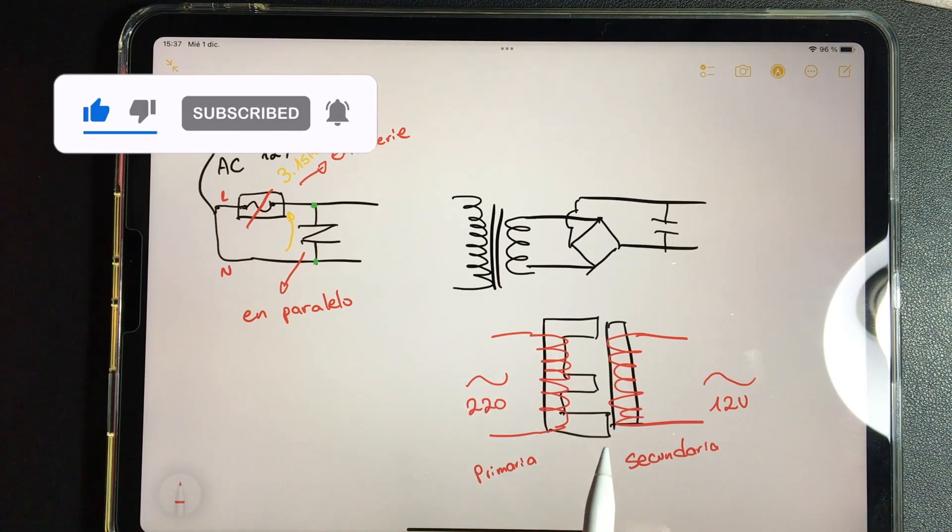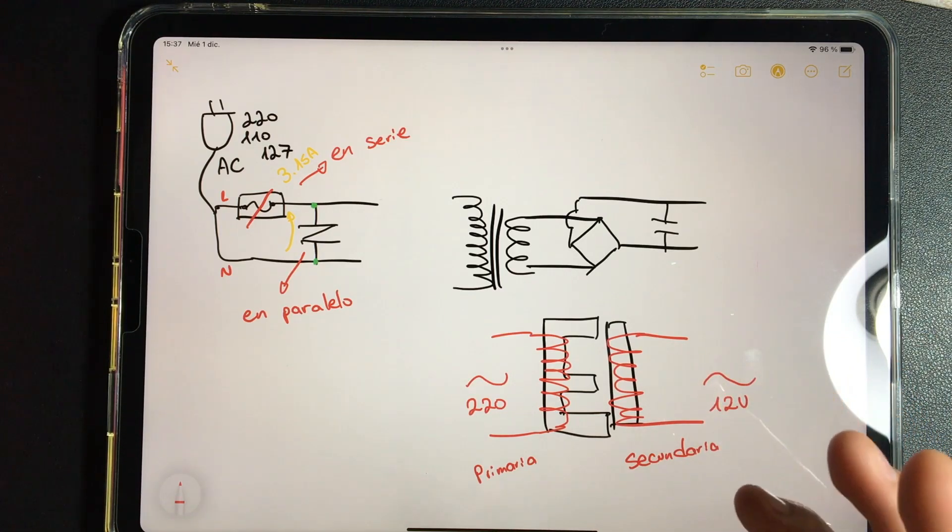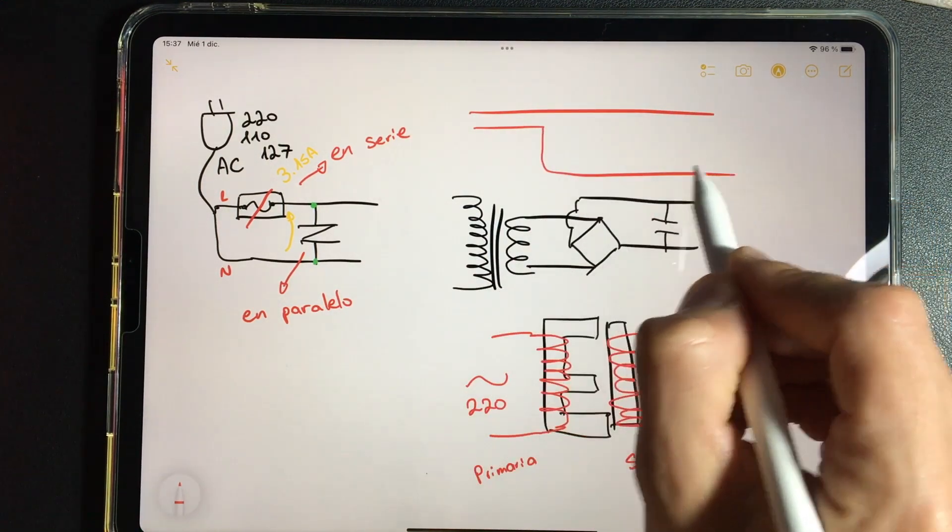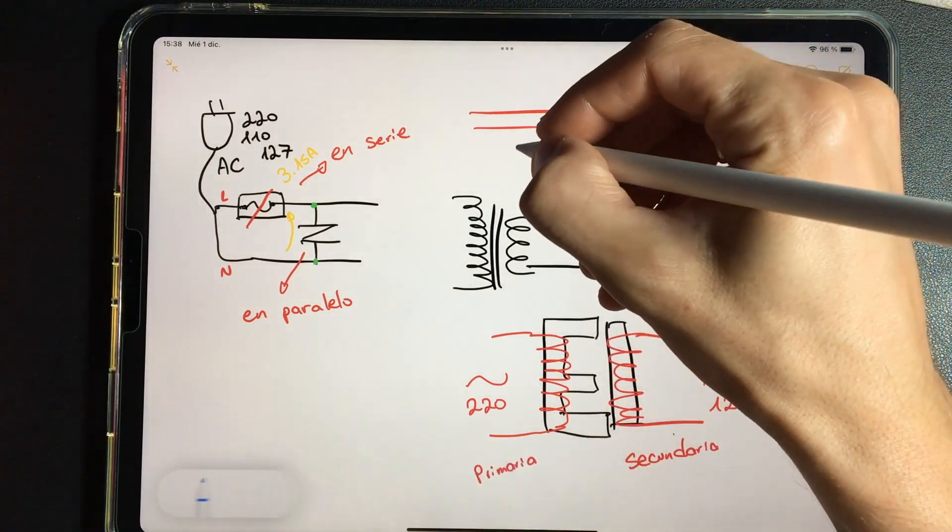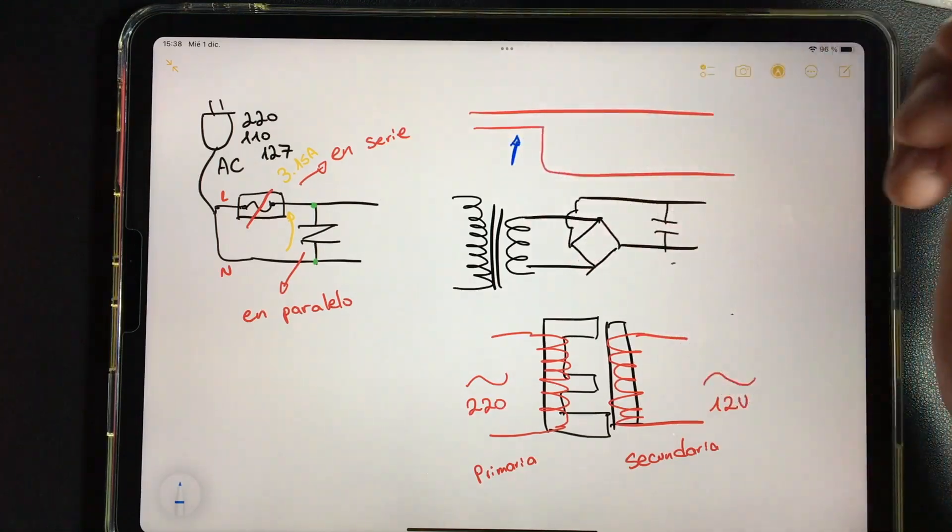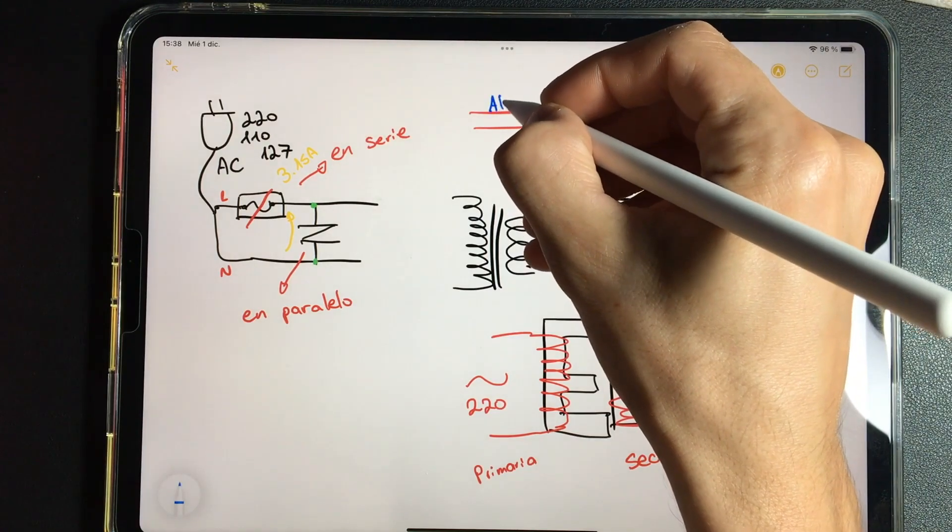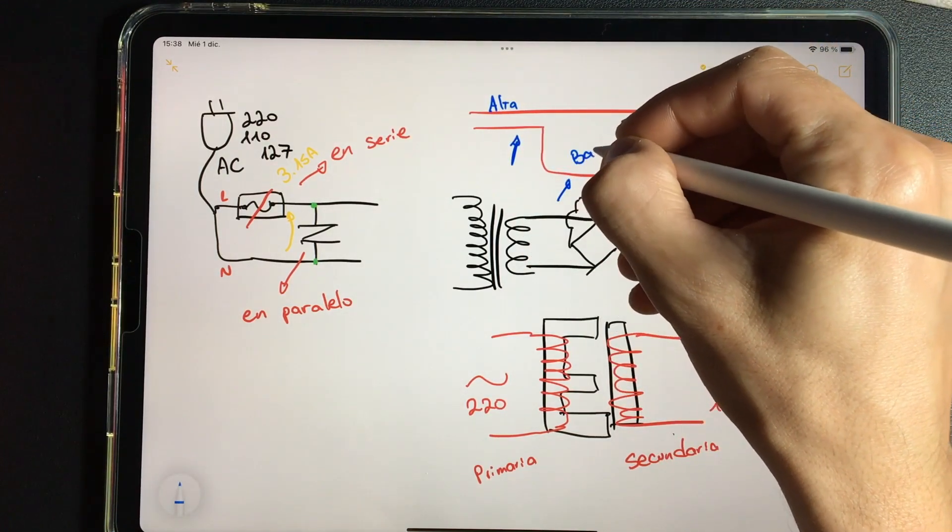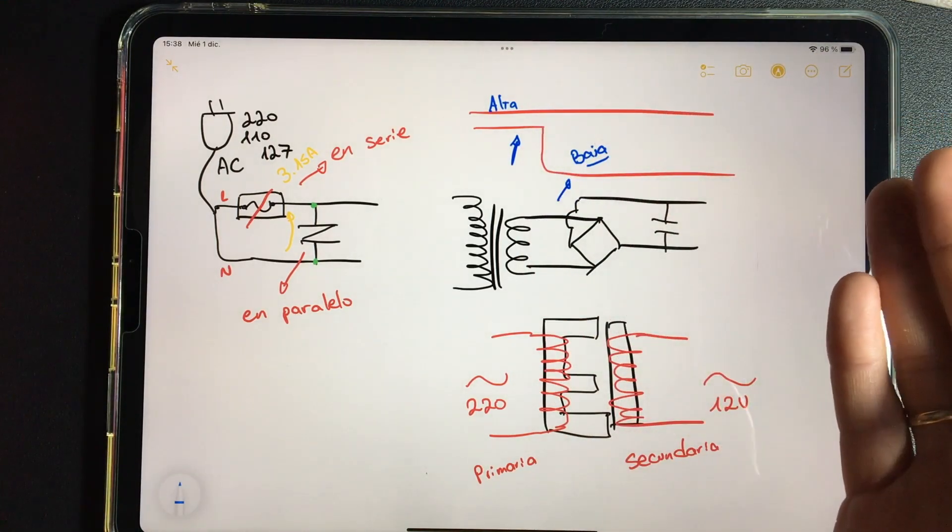How does the transformer reduce voltage? We can compare it to water, since in this way we will easily understand it. Imagine that we have a thin water tube that ends in a thick tube. What happens to the water pressure at this point? If the water pressure at that point is high, the water pressure in this area will be lower due to space issues, because here we have more space for the water to pass through.